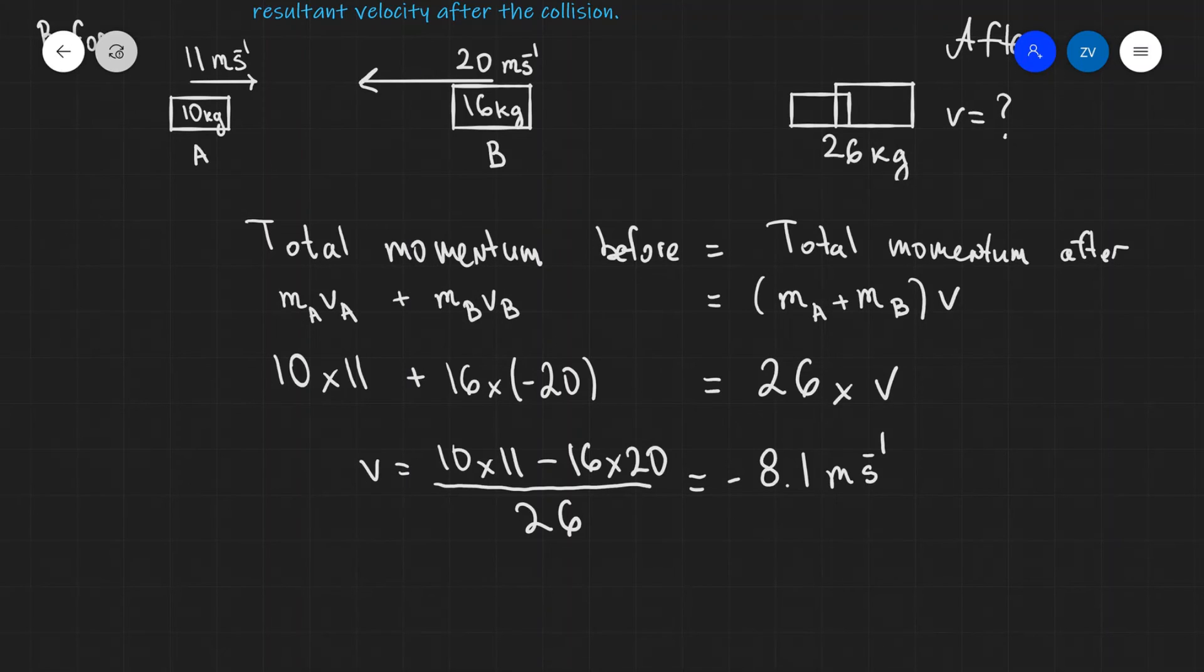So this is the magnitude of our velocity: 8.1. This is the speed. The negative sign tells us the direction is the same as this speed over here, which is pointing to the left. So we can just write this down over here: to the left.